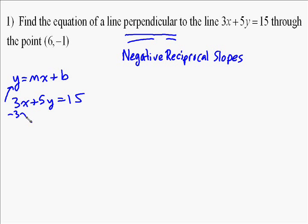Subtract 3x from both sides. You end up with 5y equals negative 3x plus 15. Divide by 5 to get y all the way by itself. Divide both sides by 5, and you get y equals negative 3 fifths x plus 3.